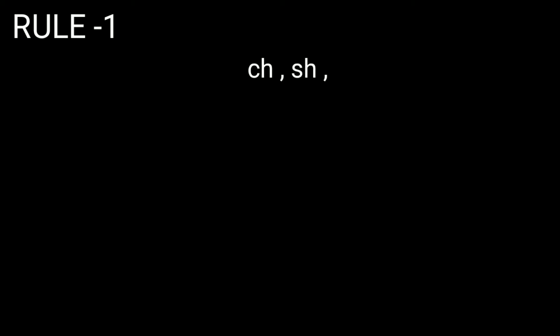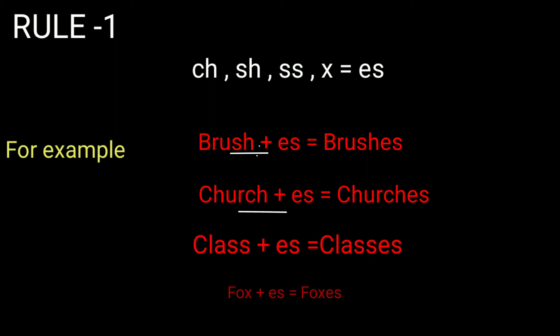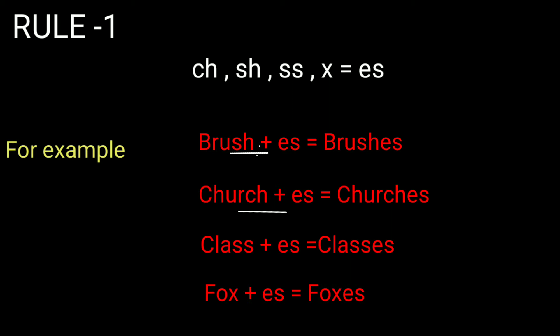Rule one: when two alphabets are affixed to each other, like ch, sh, ss, and x, you should add 'es' next to the word. For example, brush has 'sh' at the end, so add 'es' to make it plural. Similarly, church has 'ch', so add 'es'. Class and fox also take 'es' to become plural.